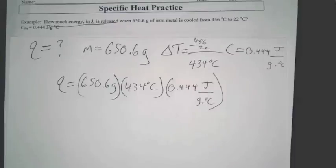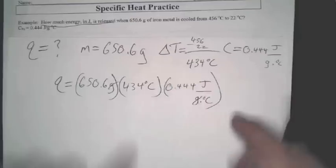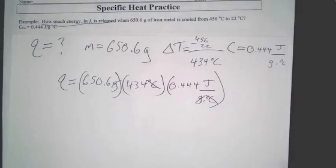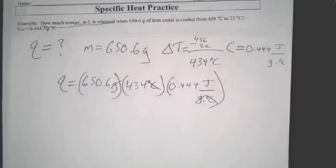Here's the thing. You look at your units. Grams are on the bottom here. They're on top here. They cancel. Degrees Celsius and degrees Celsius, those cancel. And you're left with joules by itself. So at this point, I'm assuming you can more than likely do the math to figure this out. You're just going to take 650.6 times 434 times 0.444. And we get that. That's a big number, isn't it? That's what you get though. That's the answer.